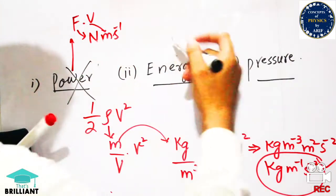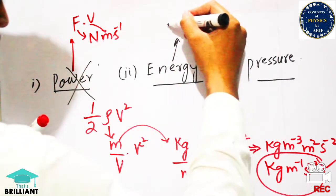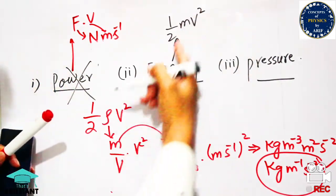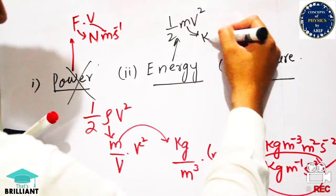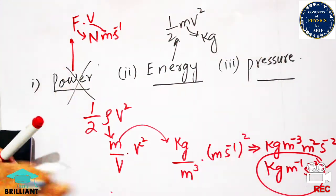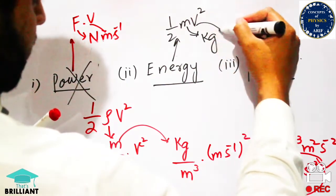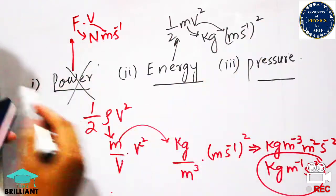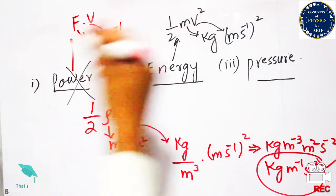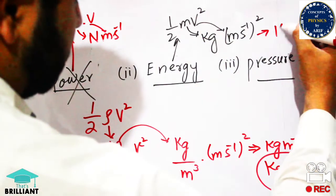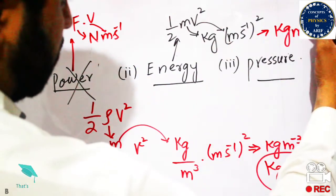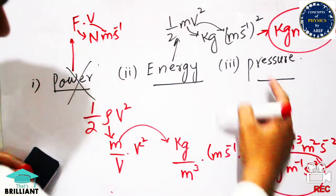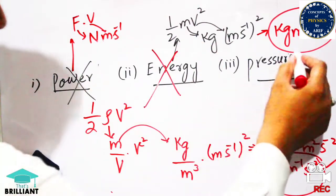Next, the units of energy come from ½mv², which is kinetic energy, or we can also use mgh for potential energy. Mass is in kilograms and velocity is in meters per second, squared. Opening this gives kg·m²·s⁻², but this is not equal to the previous expression — it has meter squared rather than meter inverse — so energy does not match either.